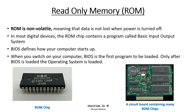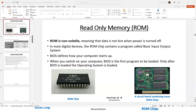Moving on to the next storage device that comes under primary memory — we just completed RAM, random access memory. Now the next thing is read-only memory, ROM. This also comes under primary memory. The first feature of ROM is that it's non-volatile, meaning data is not lost when power is turned off. When you shut down your computer, whatever data is in your ROM remains — it's not erased.